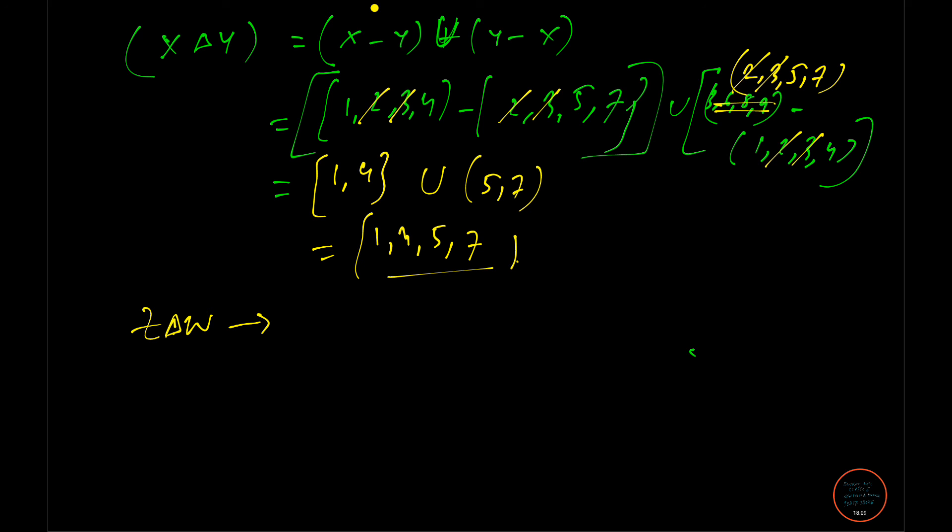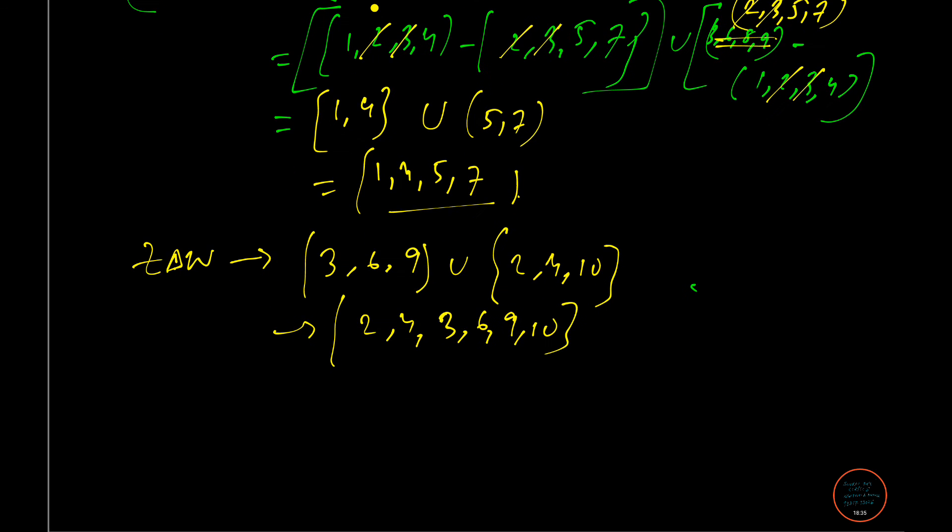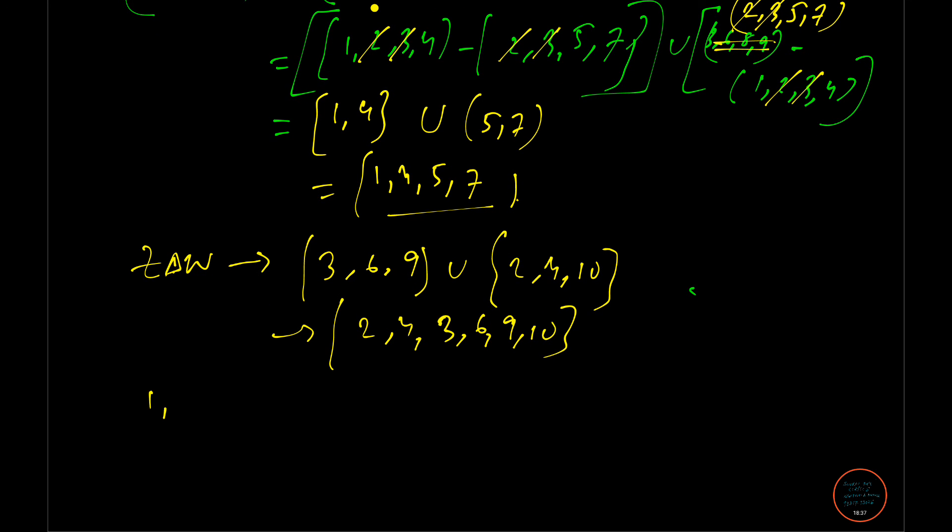It is 3, 6, 8, 9 and 2, 4, 8, 10. So 8 will be out and it is 3, 6, 9 and 2, 4, 3, 6, 9, 10. And if again take with respect to this 1, 4, 5, 7 and symmetric difference of 2, 4, 3, 6, 9, 10.